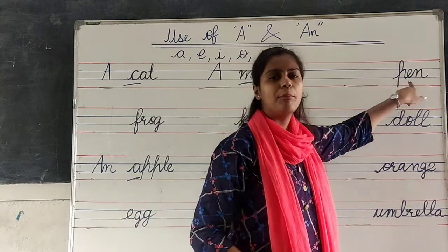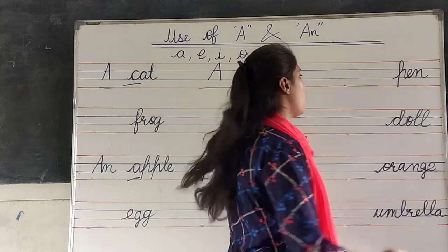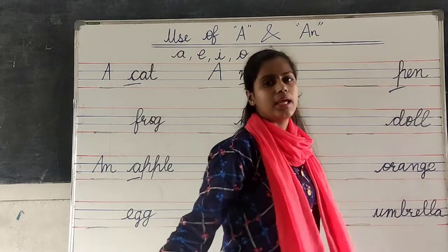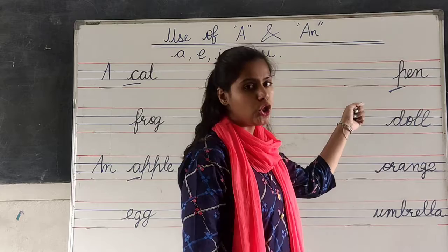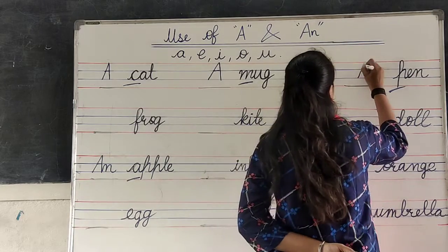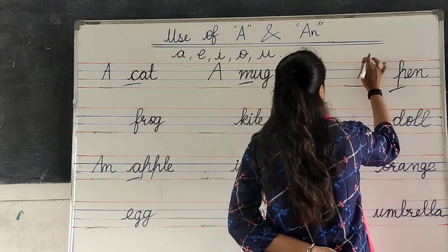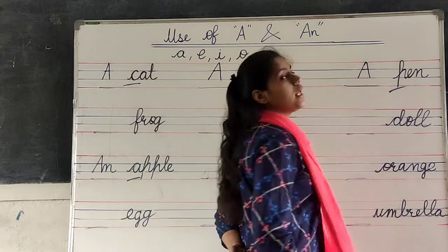Next, pen. P, E, N. Pen. What is it? P. Is it a vowel? No. Then we have to write A. Okay, students?